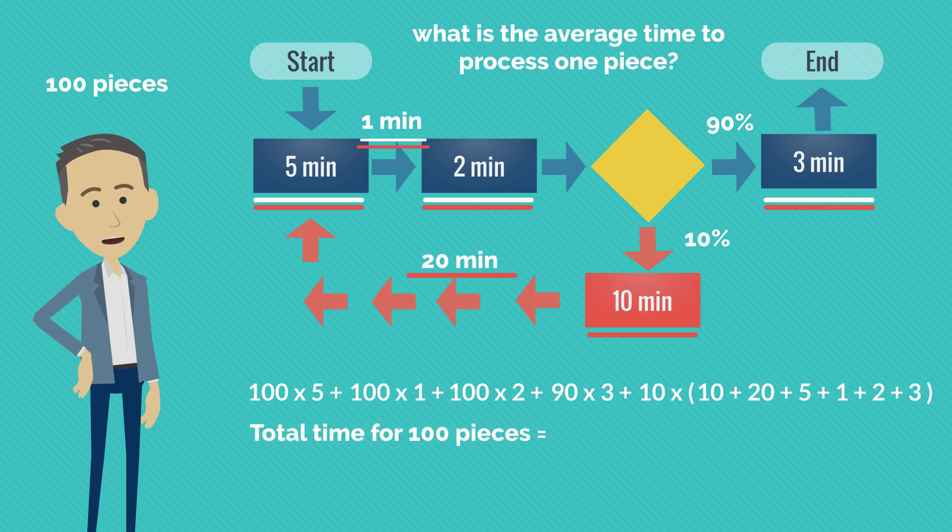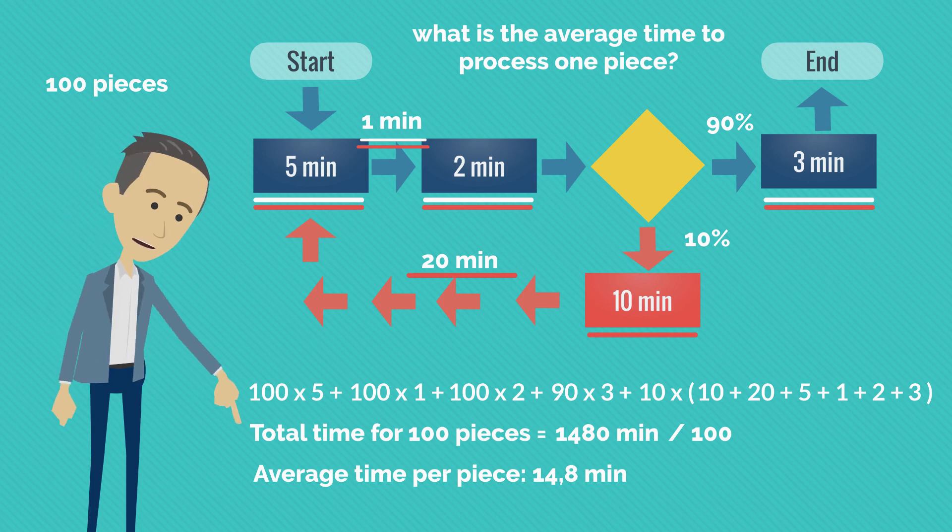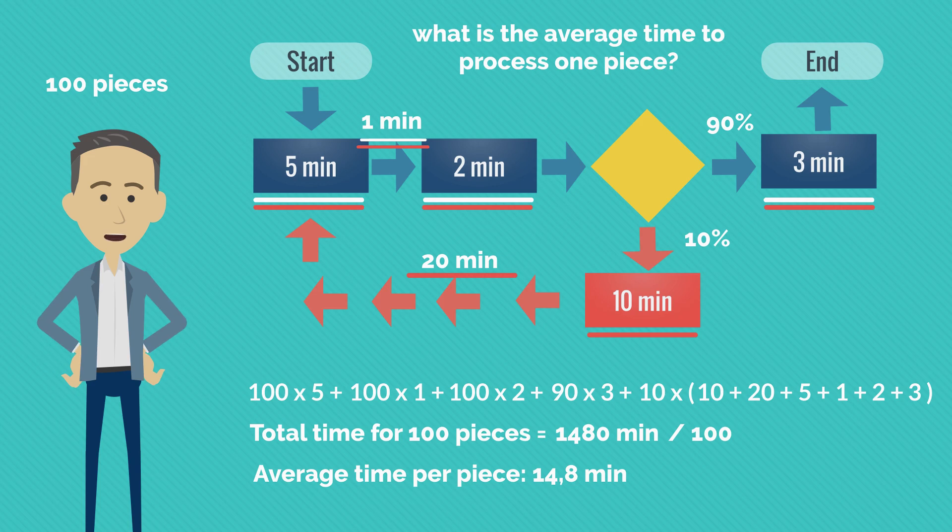So, the total time for getting all the 100 pieces done is 1480 minutes. If we divide this by 100 pieces we achieve a 14.8 minutes average time per piece. This 14.8 minutes is also referred as the process cycle time and represents the average time that the customer is waiting for one piece to get done.